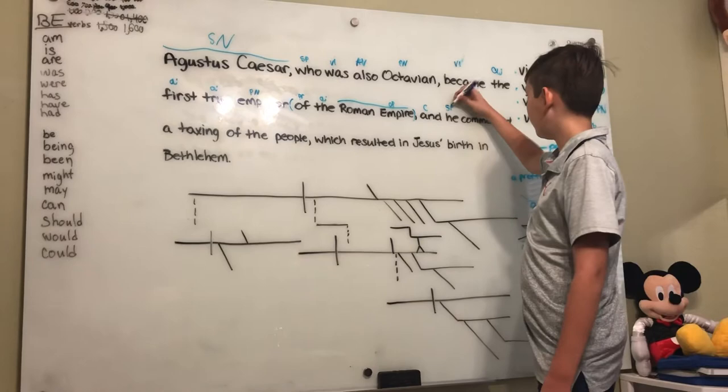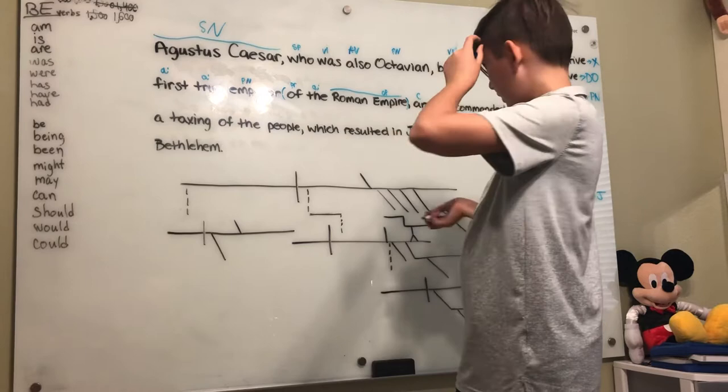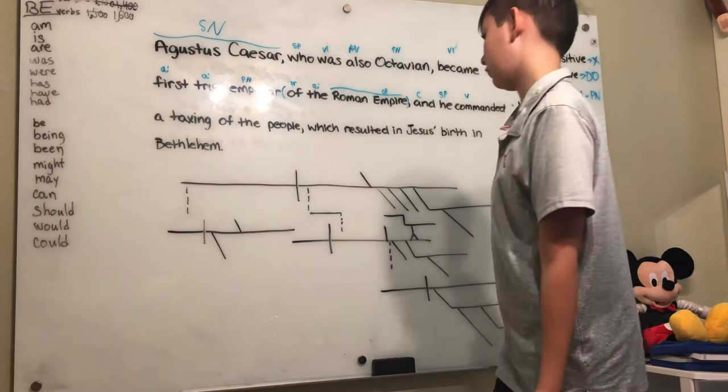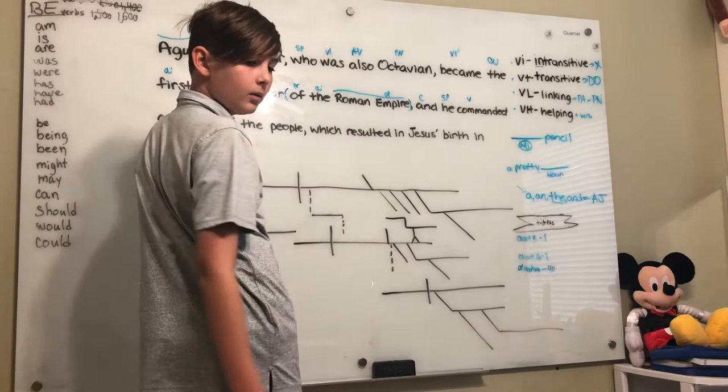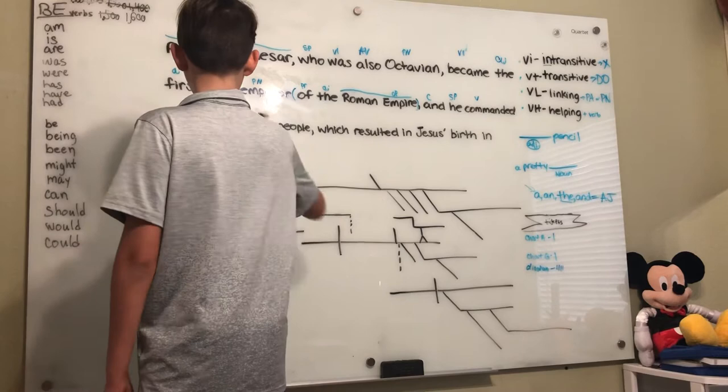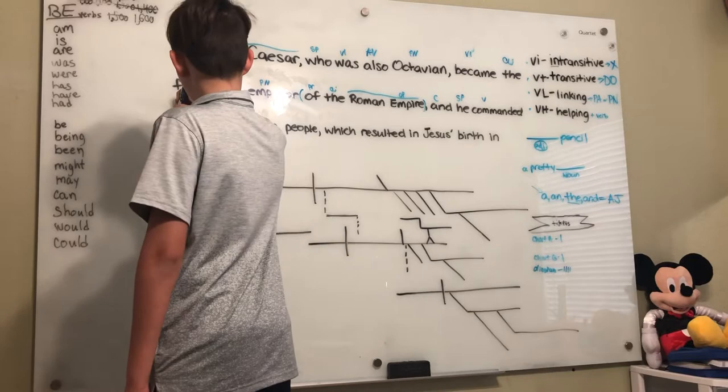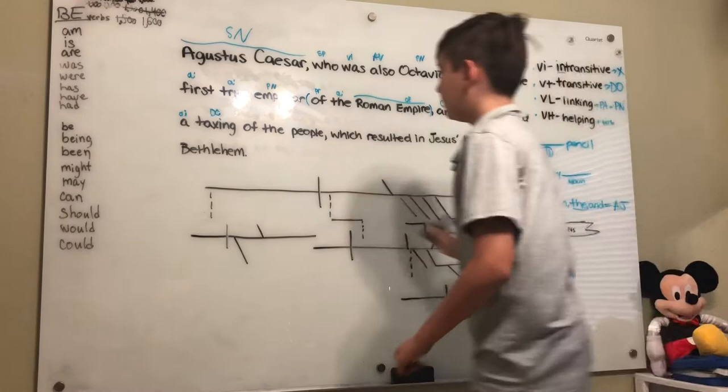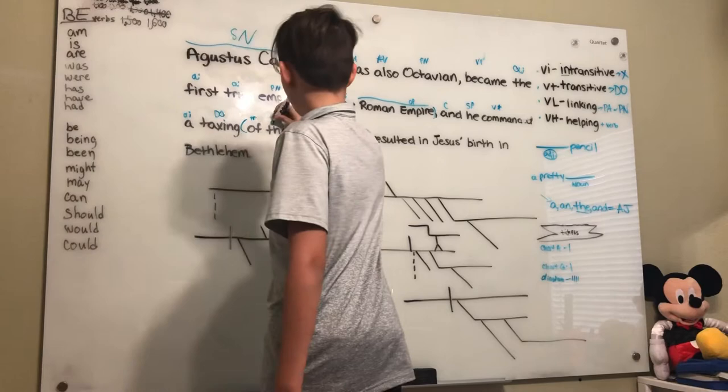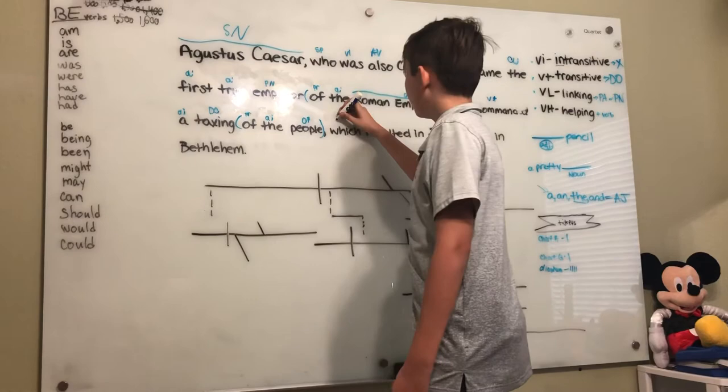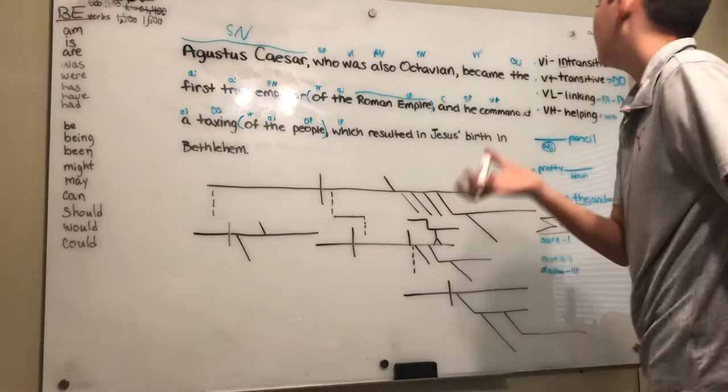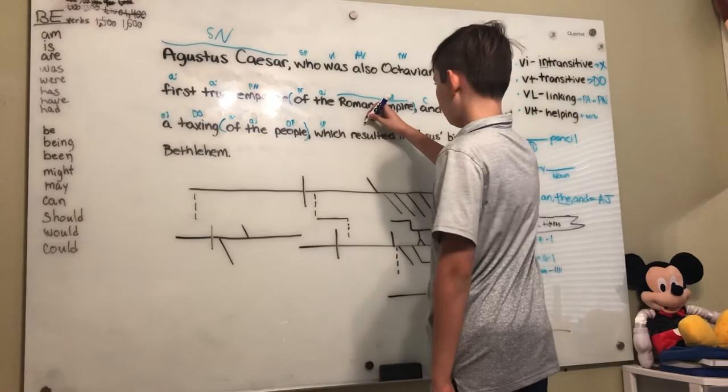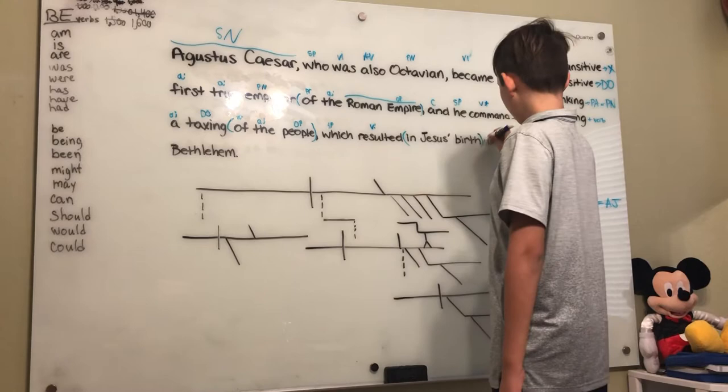We're already at three and a half minutes. So, keep moving. He. What is being said about he? He commanded. He commanded. Who or what? Taxing or not people. Right? Look at that. Make sure you don't have to take out. You know what it is. Direct object, helping, adjective. There you go. Preposition, prepositional phrase, adjective, object of preposition. Good job.